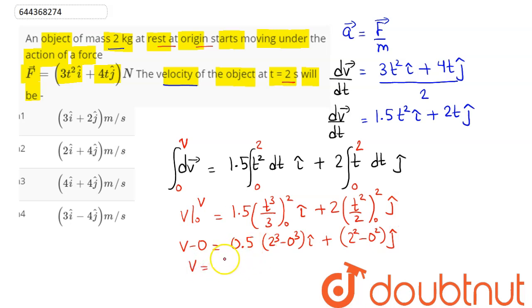So, v comes as 8 × 0.5 = 4 i cap plus 4 j cap, which is option number 3.